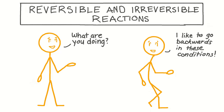In this video, we will learn how to define reversibility in chemical reactions, identify examples of reversible and irreversible processes, and discuss how changing the conditions of a reaction can cause it to go in the reverse direction.